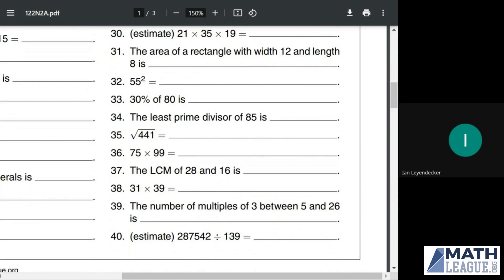The area of a rectangle with width 12 and length 8 is what? Well, the area of a rectangle is the width times the length, so the area will be 12 times 8 or 96.